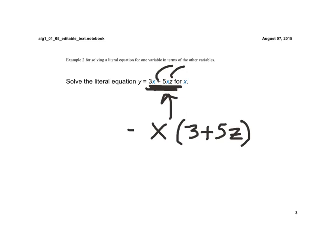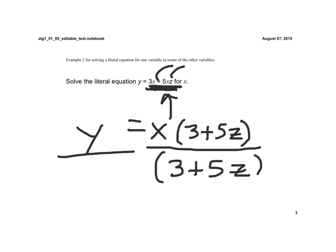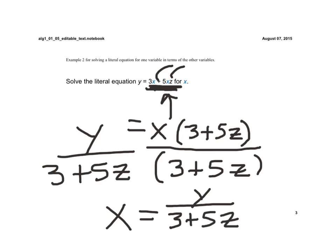Now we have y equals x times (3 + 5z). Since we now want to solve for x, the factor that's being multiplied by x is what we're going to divide both sides by. So we'll divide both sides by that sum of 3 + 5z. Then our final answer is x equals y over (3 + 5z).